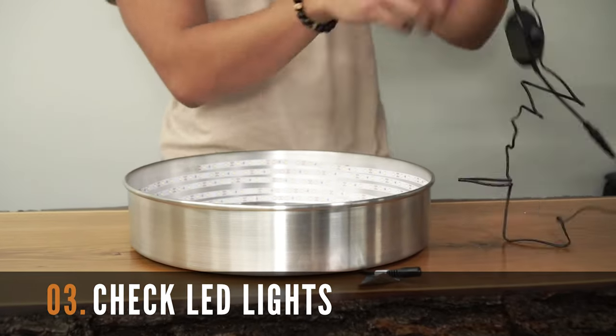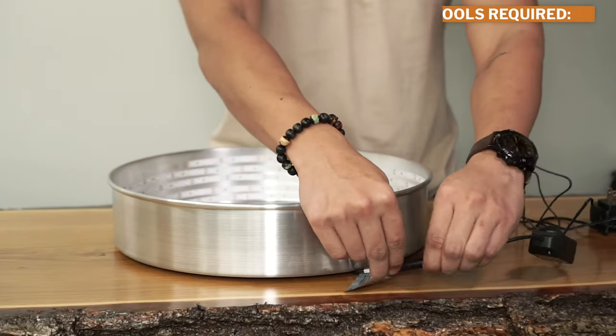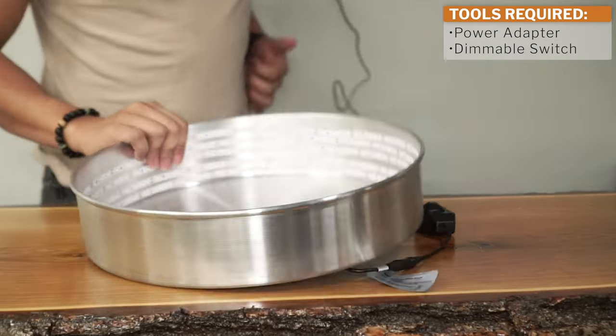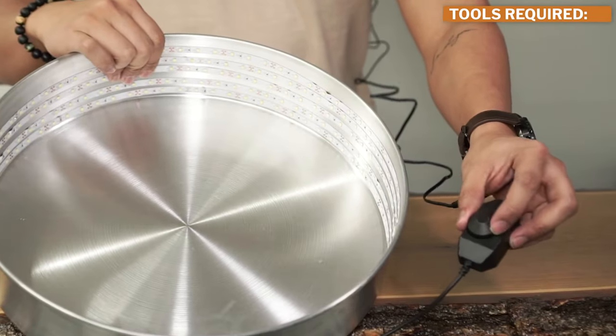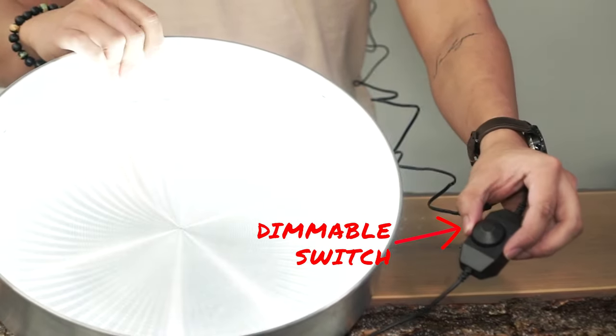Before going any further, make sure to check that the LED light strip that you just installed works. Plug the adapter and use the dimmable switch to adjust the brightness of your LED lights.